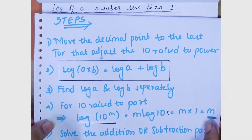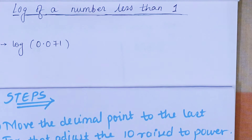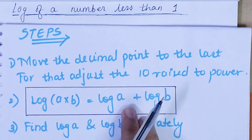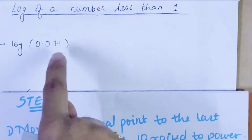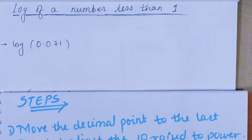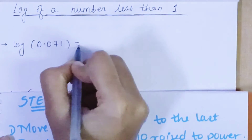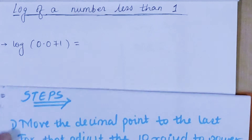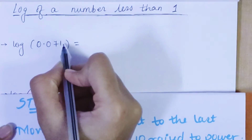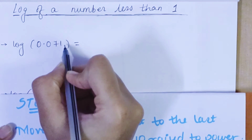Now let's start with the sum. The sum says: log(0.071). If you are clear with the logarithmic theory you would already understand what needs to be done. If not, watch till the end. The first step is to move the decimal point to the last and adjust the 10 raised to power. I want my decimal point moved to the end.